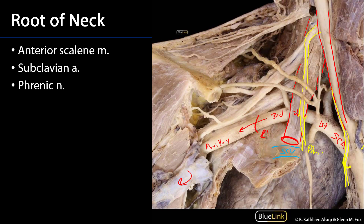Posterior to the anterior scalene muscle, and in the same plane as the subclavian artery, we have some of the trunks, and more medial to that, the roots of the brachial plexus. The brachial plexus is the nervous plexus which innervates the upper limb. And then posterior to the brachial plexus, we have the middle scalene and the posterior scalene muscles. Thank you very much for your time.